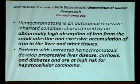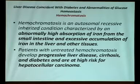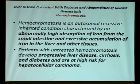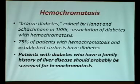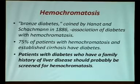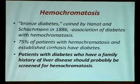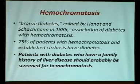Regarding coincidental liver disease with abnormalities of glucose homeostasis — hemochromatosis is autosomal recessive, with abnormally high absorption of iron from the small intestine and excessive accumulation of iron in the liver and other tissues, leading to progressive liver disease like cirrhosis and even hepatocellular carcinoma. Also called 'bronze diabetes,' a term coined by Hanot in 1986. Seventy-five percent of patients with hemochromatosis and established cirrhosis have diabetes. Patients with diabetes who have a family history of liver disease should be screened for hemochromatosis.